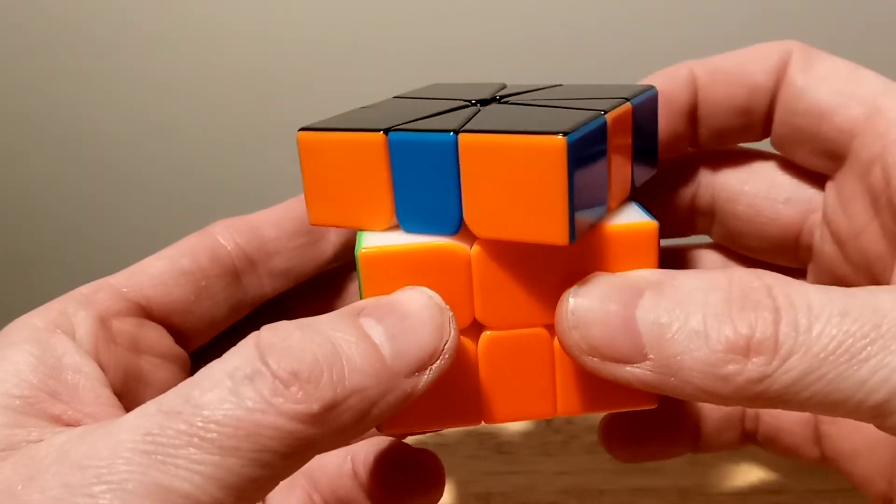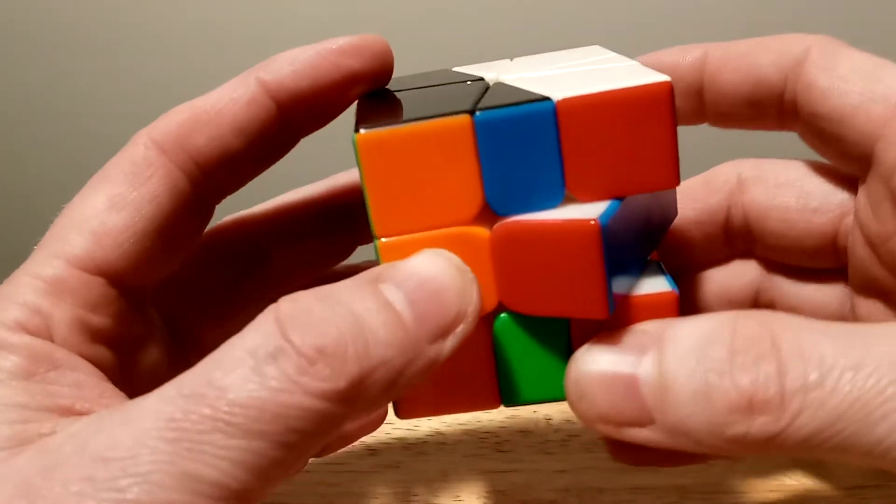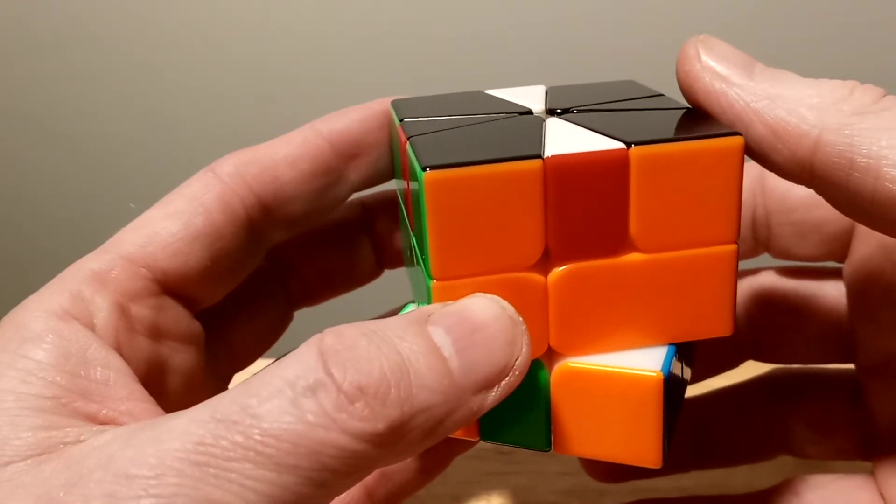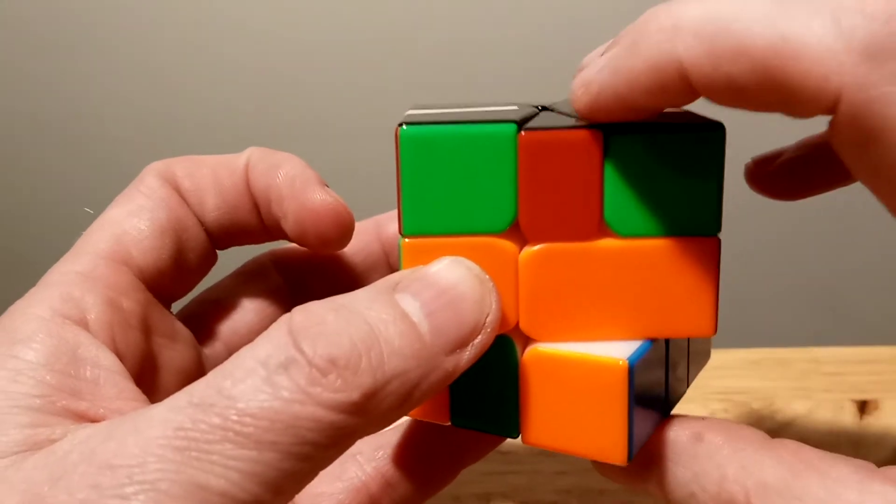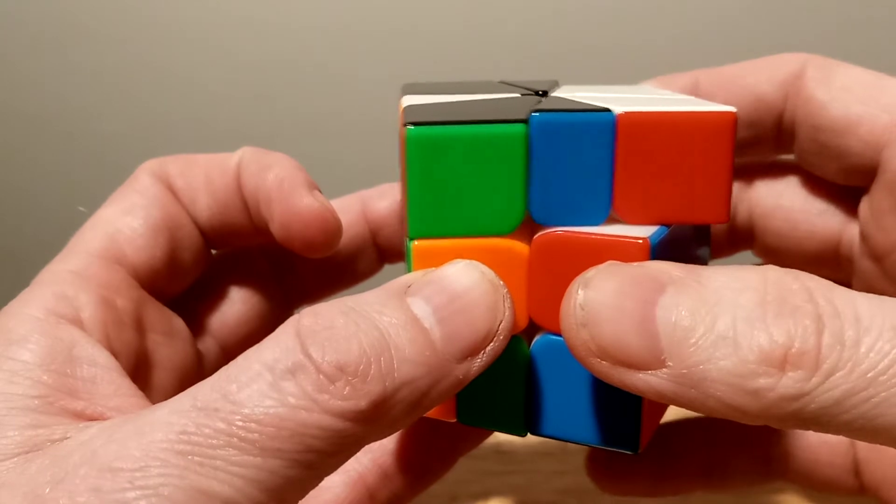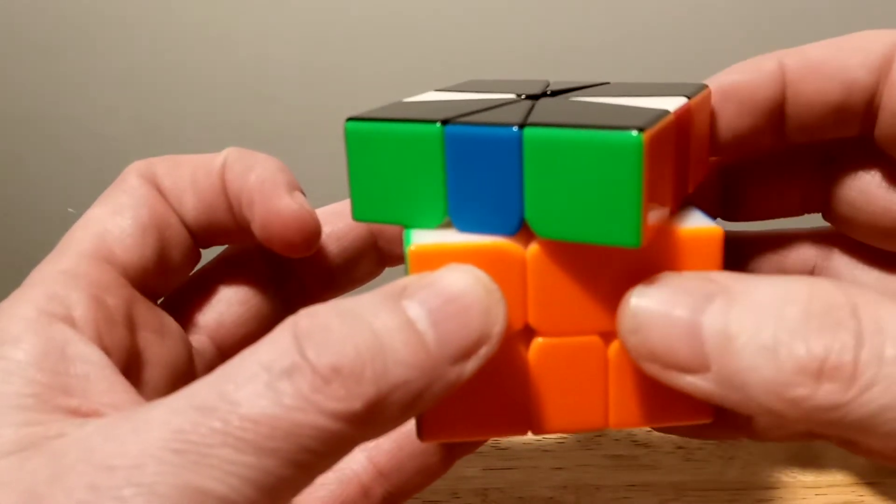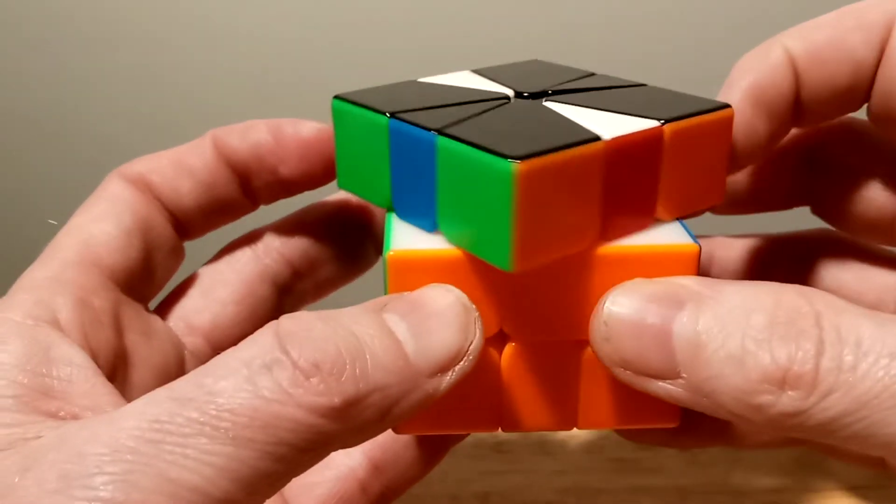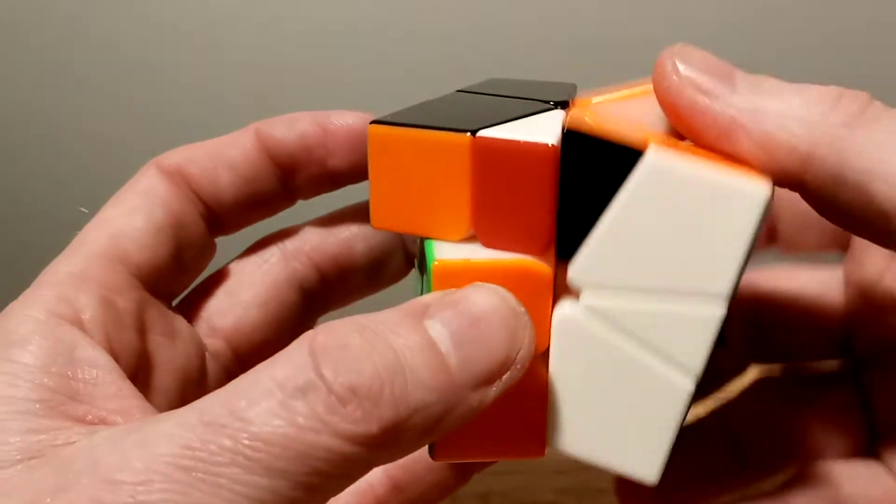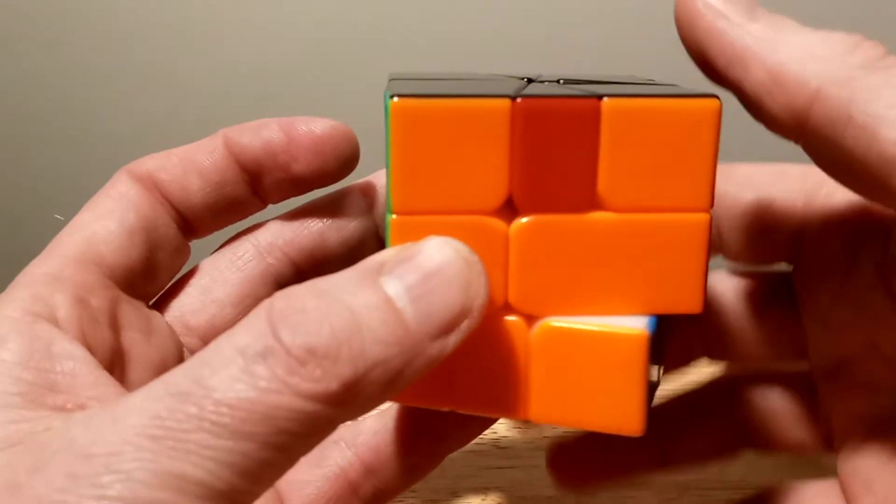So the Z-perm is 1, slice, negative 1, negative 1, slice, on top, negative 3, slice, 1, and 1, slice, and we do a 3 here, slice, negative 1, negative 1, and slice.